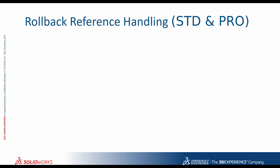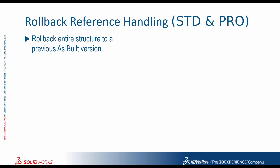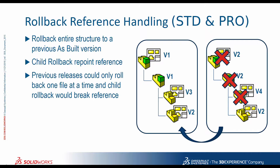The next thing we're going to talk about is rollback reference. This is included in both PDM Standard and Pro. Rollback is a function in PDM that will destroy older versions of files. For example, if you have 10 versions of a file and you roll back to version 5, it's going to destroy versions 6, 7, 8, 9, and 10. The great thing is that it rolls back the entire structure to version 5, so if you're rolling back an assembly, it would roll back all the child features as well. Previous releases of SOLIDWORKS would only roll back the particular file, which could break references. This is a really great function for those of you that use rollback.